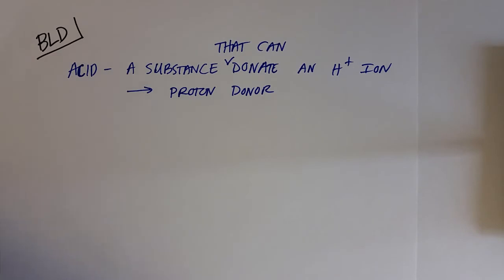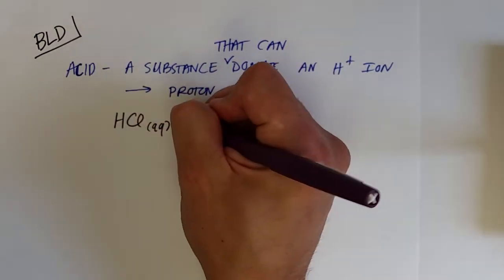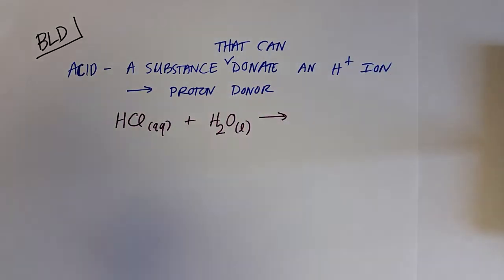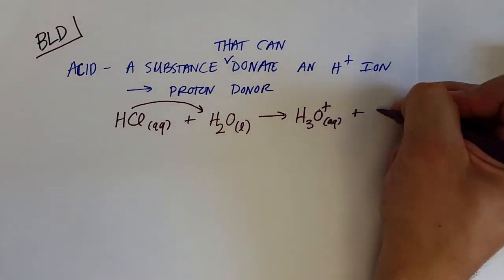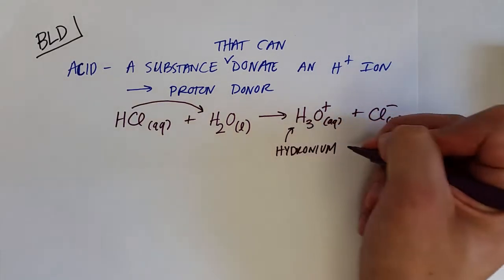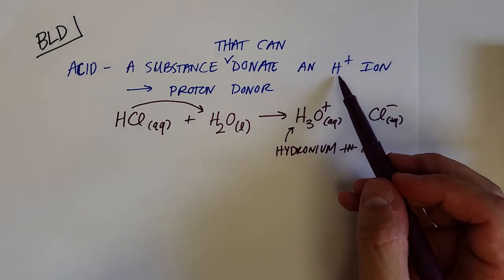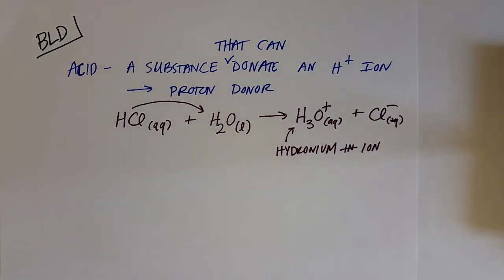HCl can be an acid for the Bronsted-Lowry definition as well. We just have to talk about what it donates the H-plus ion to — and that, since it is an aqueous solution, is water. Water is what is going to accept that proton. HCl donates the H-plus ion to water, and that will actually form the H3O-plus ion, which is the hydronium ion, with Cl-minus left over. That H-plus ion that ionizes from HCl is very strongly attracted to the lone pair of electrons on the water molecule and forms the H3O-plus ion almost immediately.